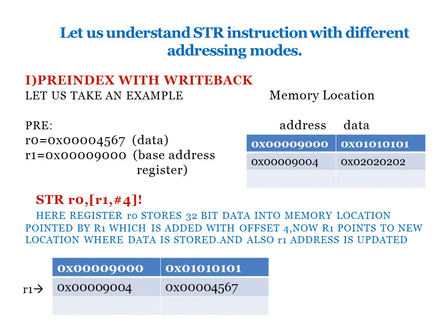Next we see how STR can be used with different addressing modes. For pre-index with writeback, R0 holds the value 4567 and I want to copy it into memory location 9004. The instruction is: STR R0, [R1, #4]!. R1 has the base address 9000, offset 4 is added making it 9004, and the data 4567 from R0 is copied into that location. The exclamation mark indicates that R1 is also updated to 9004.